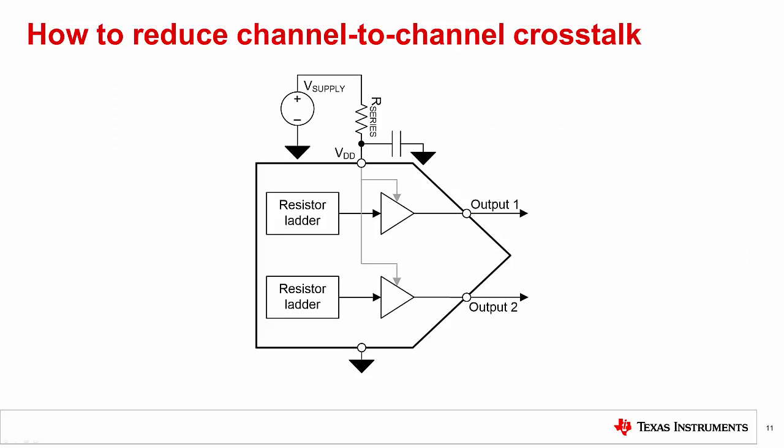Next, power supply loading as a source of crosstalk can be reduced with good decoupling and layout techniques. Using wide and direct traces from the power supply source to the DAC supply pin will help reduce the series resistance and inductance on the trace. Placing decoupling capacitors as close to the pin as possible will isolate some of the series resistance from the supply node. This will help with AC crosstalk as the capacitor will reduce voltage changes on the supply pin during current transients.